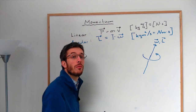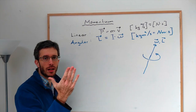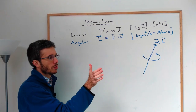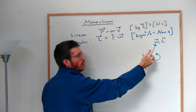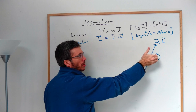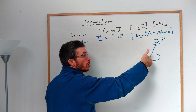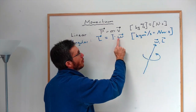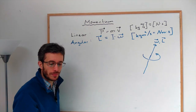To find which way the vector goes, use the right-hand rule: curl your fingers in the direction the object is turning, and your thumb points in the direction of ω and L.